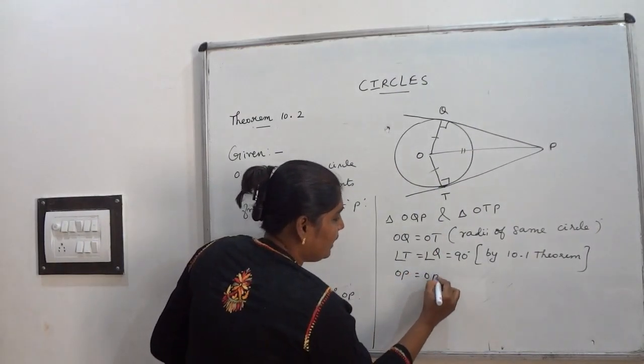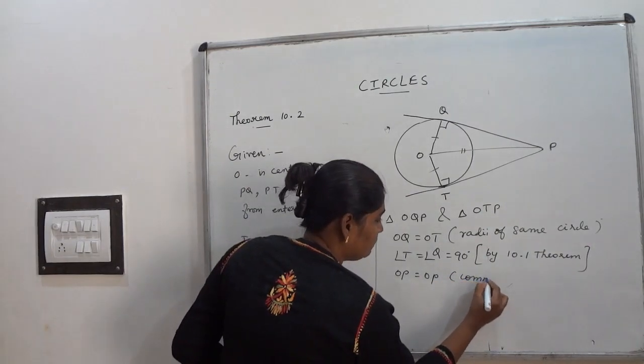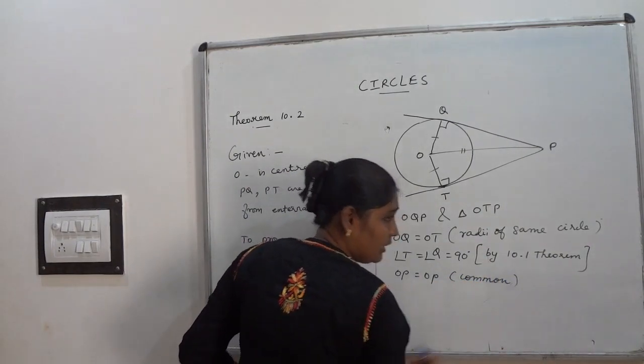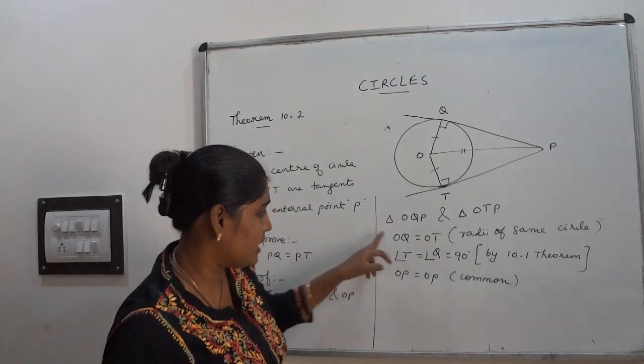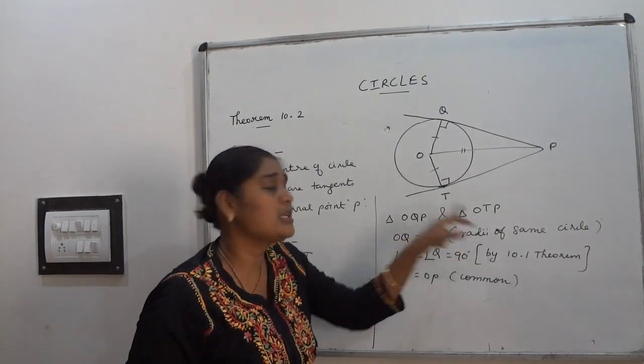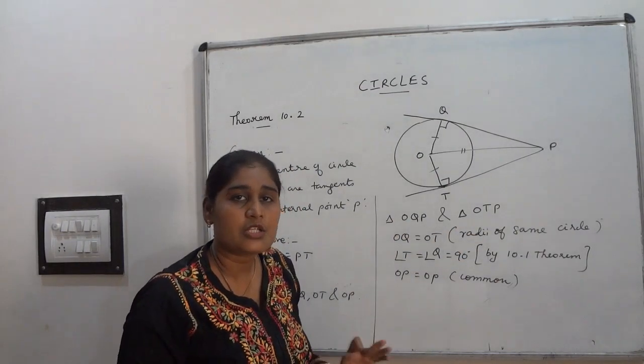Then go for OP is common in both the triangles. OP equal to OP common side of both the triangles. From these three statements, we can tell that these two triangles are congruent by RHS rule.